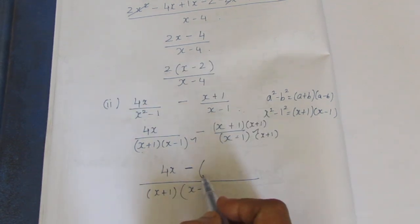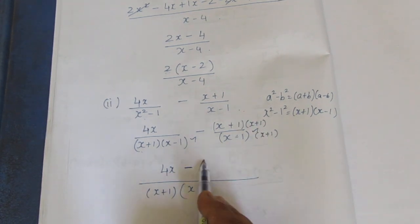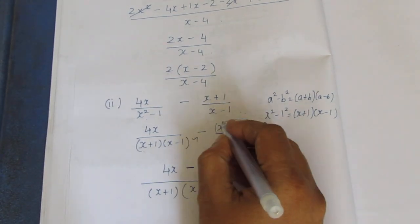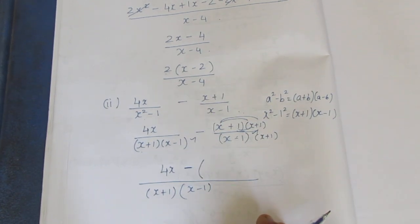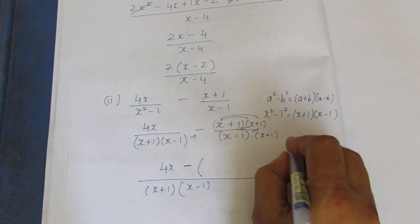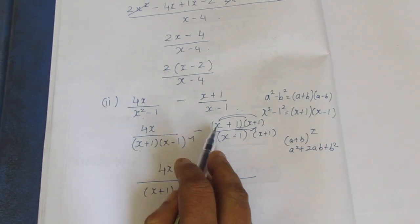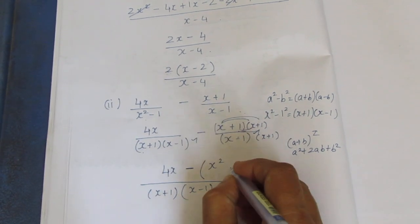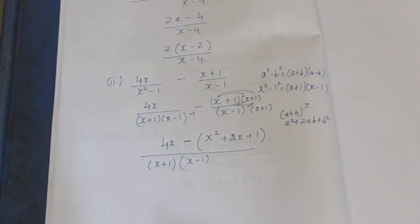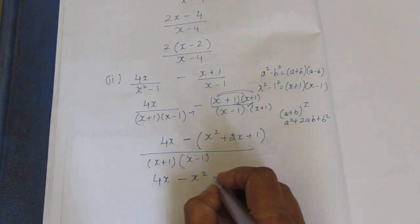When the minus sign opens a bracket with more than one term, you must use the bracket. We use the a plus b whole square formula — or binomial multiply, or x plus a into x plus b formula. The a plus b whole square formula gives: a squared plus 2ab plus b squared. So with a equals x and b equals 1: x squared plus 2x plus 1.